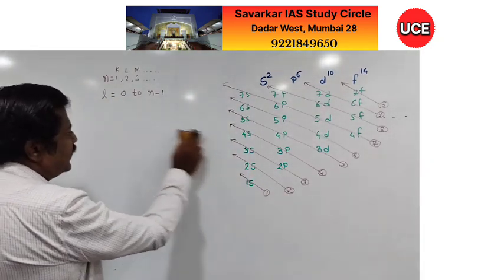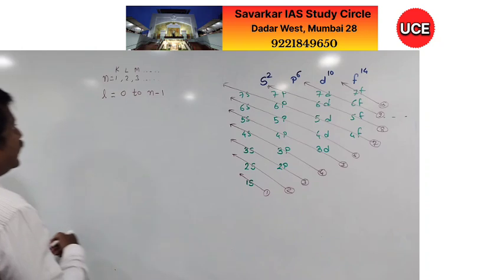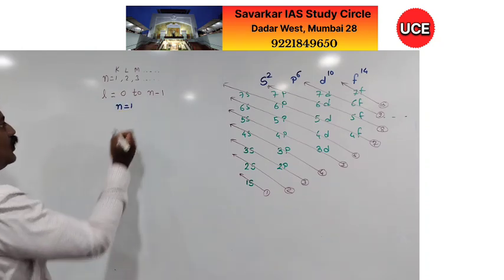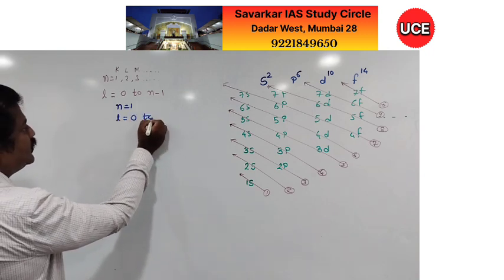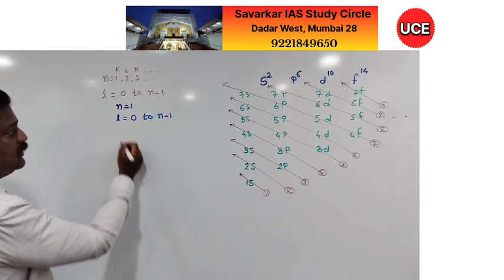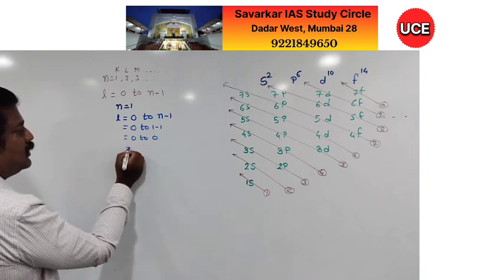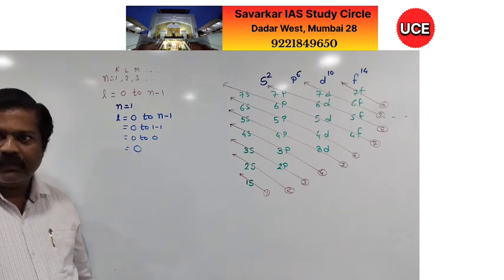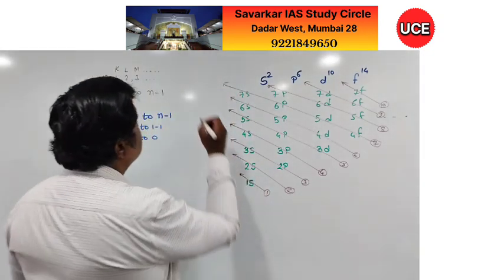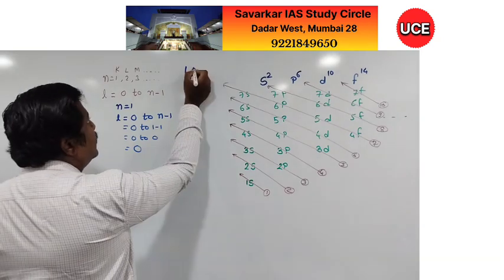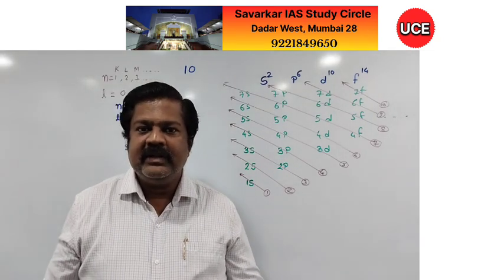Let us go step by step. For n = 1, l will have values from 0 to n−1, that is 0 to 0 — only 0. If written as principal quantum number followed by azimuthal quantum number, it would read as '1,0', which could be misread as '10'. To avoid confusion, l = 0 is written as S.